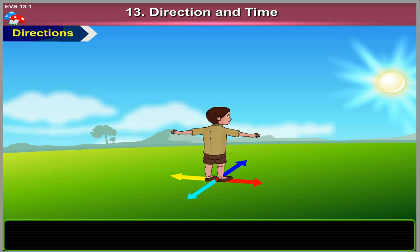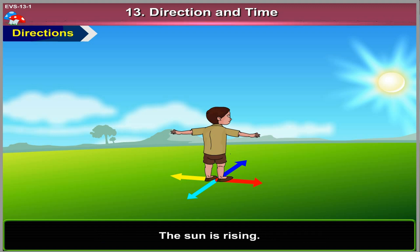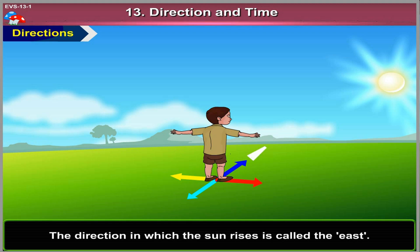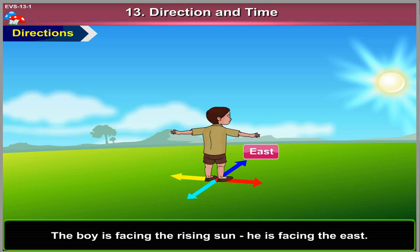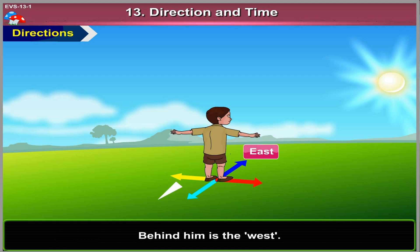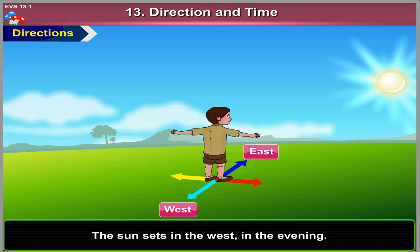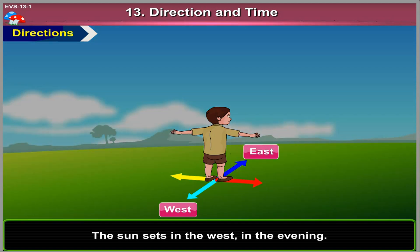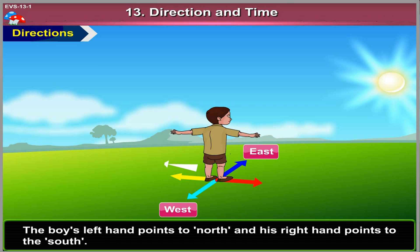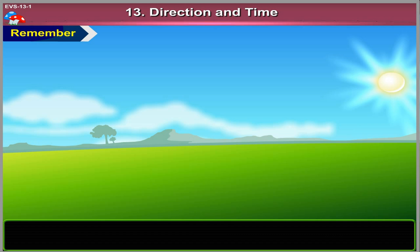Directions. Look at the picture given. It is morning. The sun is rising. The direction in which the sun rises is called the east. The boy is facing the rising sun — he is facing the east. Behind him is the west. The sun sets in the west in the evening. The boy's left hand points to north and his right hand points to the south.